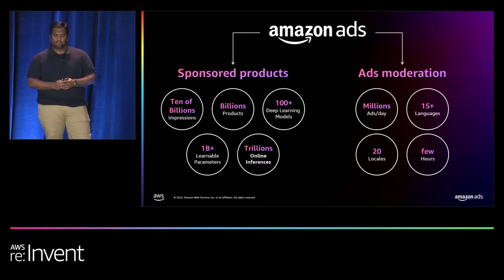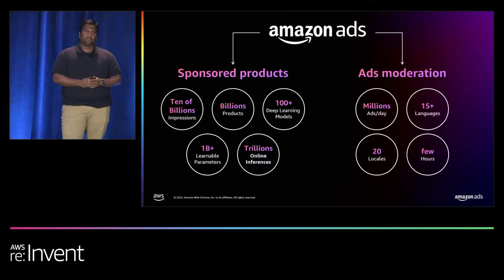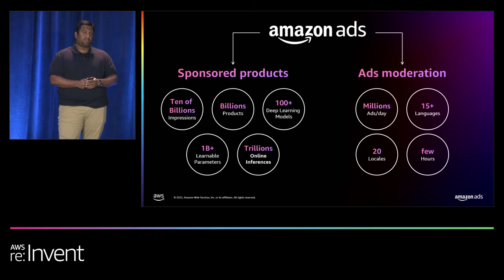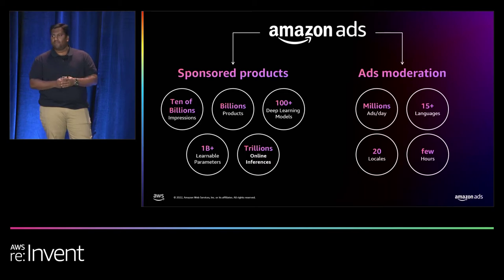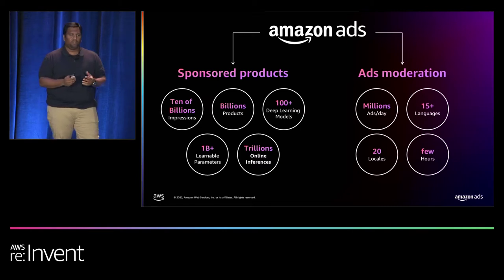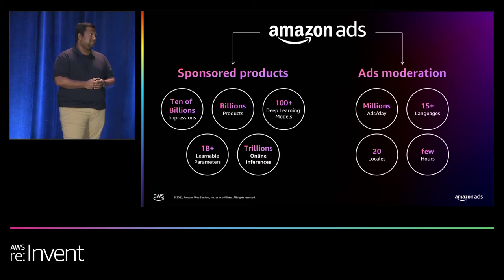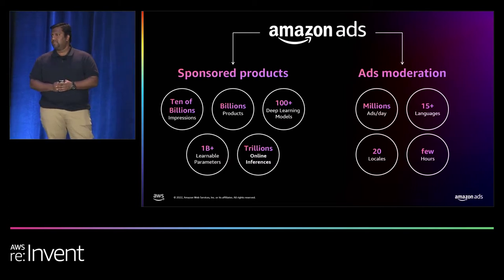Next, the Ads Moderation team. The moderation team helps make advertisements on Amazon safe, trustworthy, and of high quality for customers. It also helps create a successful environment for product sales. Amazon Ads having operations worldwide poses unique challenges. Because they are global, they need to moderate millions of ads every day in more than 15 different languages across 20 different locales, and they need to do that all within a few hours. The engineering they do is pretty phenomenal.